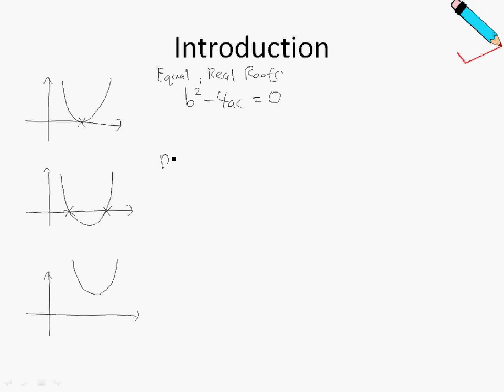And in the second case, we have distinct roots because there are two distinct roots over here, and the roots are real because we can actually solve for the roots. So your discriminant will be greater than 0.